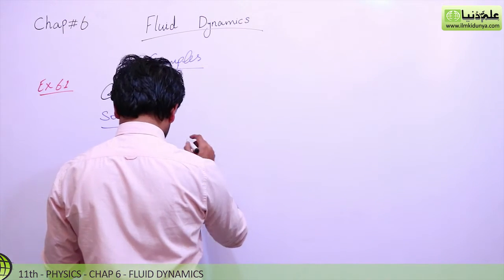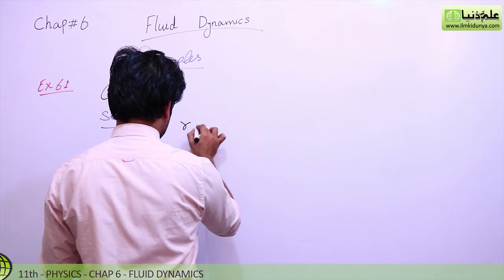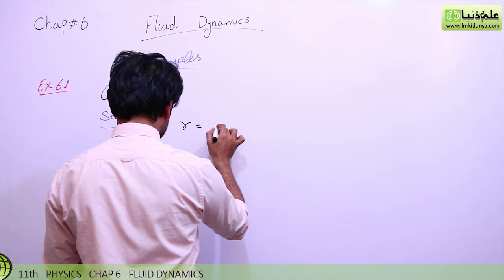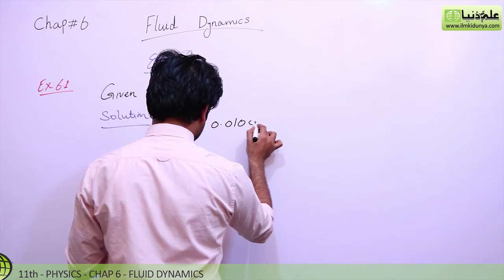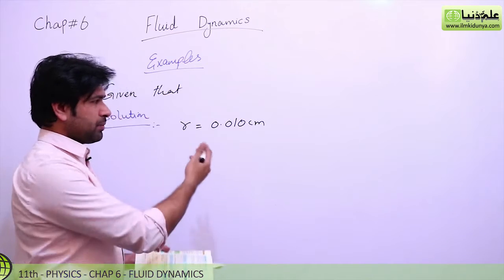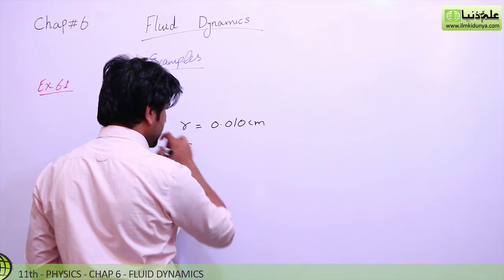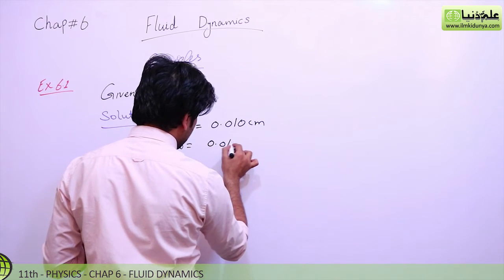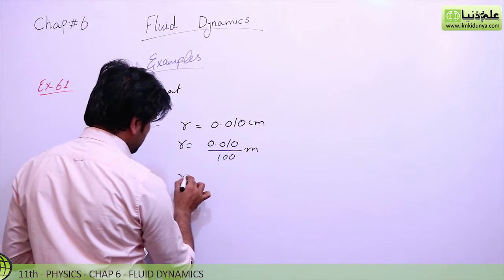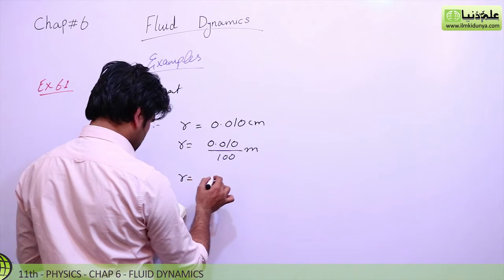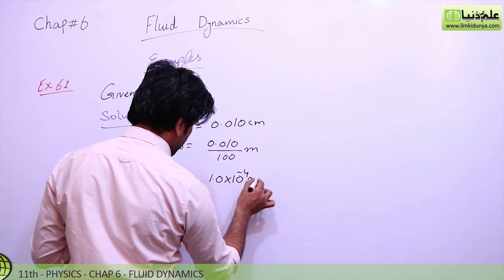Given that we have radius of tiny droplet which is given as 0.010 cm. First we will convert this centimeter into meter. For this sake we will divide this term by 100, then we can have meter. So by solving this, we can have 1.010 raised to power minus 4 meter.